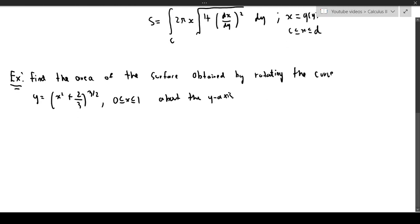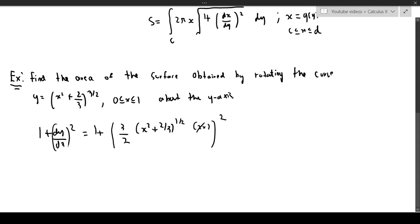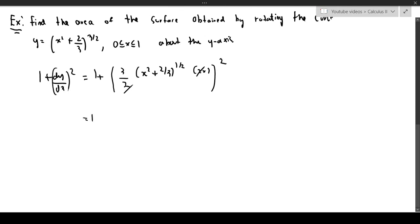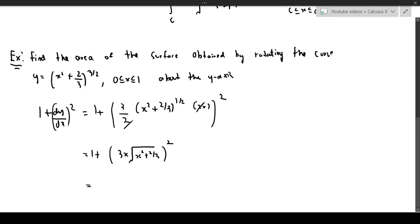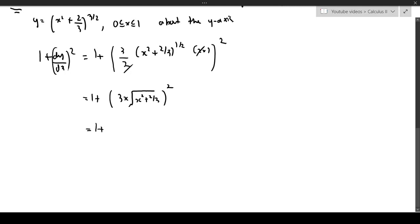Let's work through this. We need 1 plus (dy/dx)². Differentiating the function gives us (3/2) times (x² + 2/3)^(1/2) times 2x, and the 2's cancel. So we're left with 1 plus [3x times √(x² + 2/3)] squared. Squaring that expression gives 1 plus 9x²(x² + 2/3). Expanding, we get 9x⁴ + 6x² + 1, which factors as (3x² + 1)².